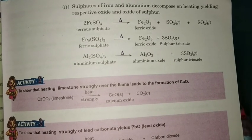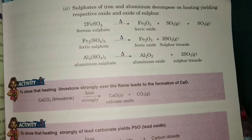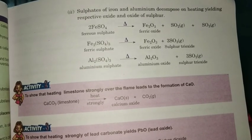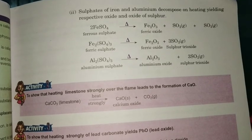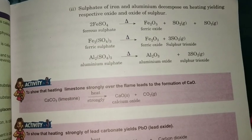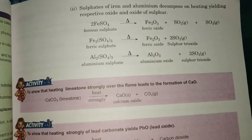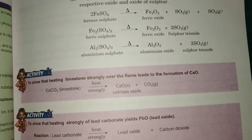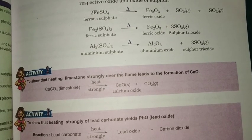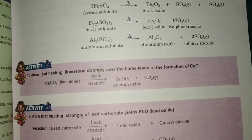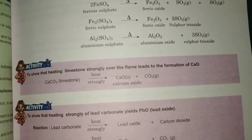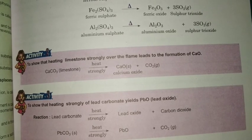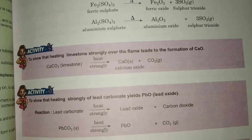How do sulfates behave? If you take metal sulfates and supply heat, they give their respective oxide and oxides of sulfur. For example, ferrous sulfate (FeSO4) gives ferric oxide, sulfur dioxide, and sulfur trioxide. Ferric sulfate, Fe2(SO4)3, on heating gives ferric oxide and only sulfur trioxide — note that sulfur dioxide is not liberated here. Similarly, aluminum sulfate on heating gives aluminum oxide and only sulfur trioxide, not sulfur dioxide.